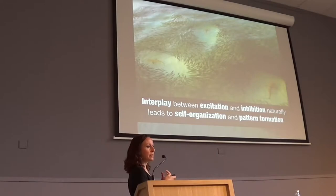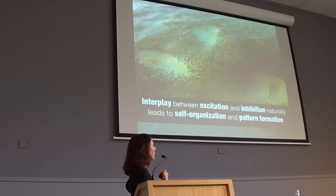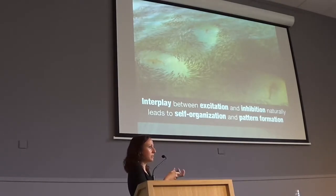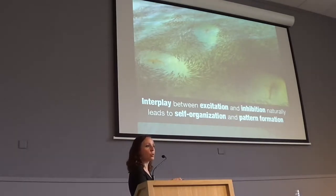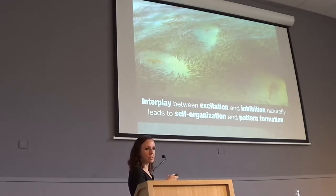The interaction between excitation and inhibition can naturally give rise to pattern formation — patterns would self-organize. To illustrate: imagine two types of populations — little fish and sharks. The little fish represent the excitatory population because they want to be near each other, while sharks are inhibitory because little fish don't want to go near them. By the interaction of these two types of populations, these patterns naturally form. The same thing is actually happening in the brain — the patterns naturally self-organize through the interaction between excitatory and inhibitory neural populations.